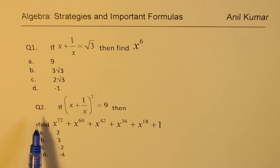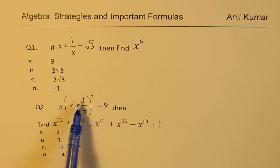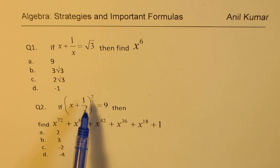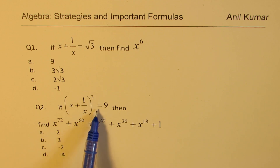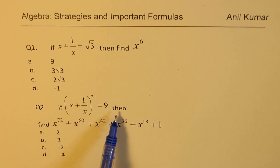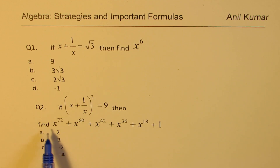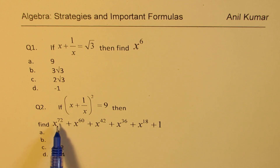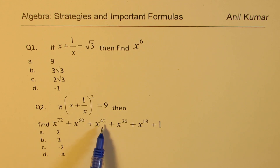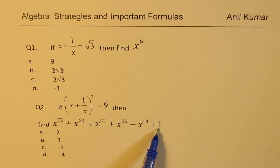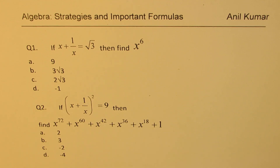Question number two is: if x plus one over x, whole square, is equal to nine, then find the value of x to the power of 72 plus x to the power of 60 plus x to the power of 42 plus x to the power of 36 plus x to the power of 18 plus one. So that becomes a very complicated question indeed.